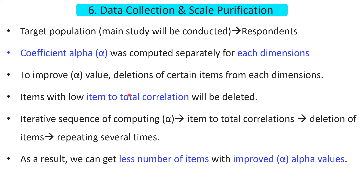To decide which items to delete, we use the following criteria: items with low item-to-total correlation will be deleted first. Item-to-total correlation is the correlation between the score on a single item and the sum of the scores of all other items making up that dimension. Items with low item-to-total correlation are deleted first, which increases the coefficient alpha value and decreases the number of items. We may repeat this step several times to decrease the number of items and increase the coefficient alpha.